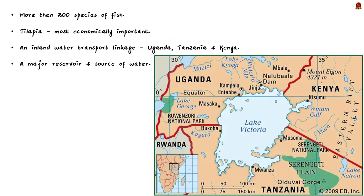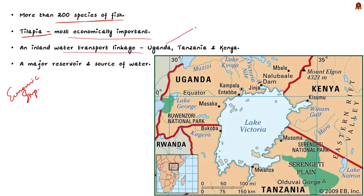Now let's see the economical importance of this lake. The lake has more than 200 species of freshwater fishes present in it. Among these, the tilapia is the most economically important fish. The lake also acts as an inland water transport linkage for the three East African states — Uganda, Tanzania, and Kenya. Furthermore, the lake is a major reservoir and source of water for domestic, industrial, and commercial purposes. So we can understand that the lake serves as a fishing ground, water source, and even for producing power through hydroelectric power plants.